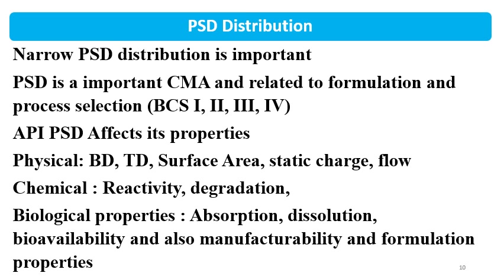Now we will see the importance of PSD distribution and specification. Always consider PSD as a critical material attribute, whether it is API or excipient. It is important because it affects the process, it affects drug product quality attributes, it affects stability, and it affects bioavailability. That is why PSD distribution becomes very important. Narrow PSD distribution is very important because it ensures batch-to-batch consistency — all API batches used in manufacturing will have consistently the same or similar particle size. PSD is an important critical material attribute related to formulation and process selection.